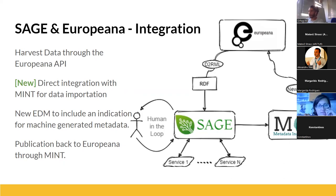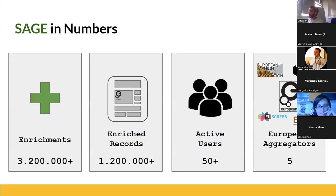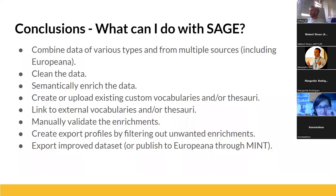Some numbers: SHADES has been used in previous projects with more than three million enrichments across more than one million records, more than 50 active users, and it has been used by five European aggregators. We're still improving and expanding. In conclusion, with SHADES you can transform data of any format from any source into RDF and import it, giving you a uniform representation of your data.